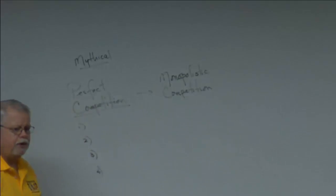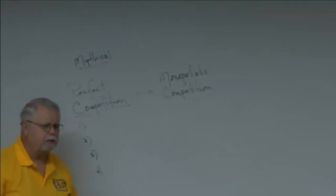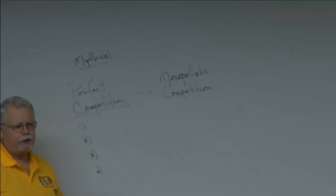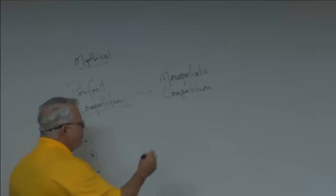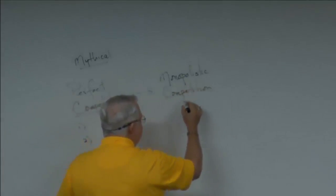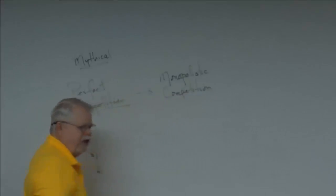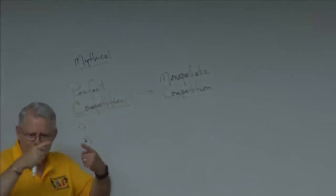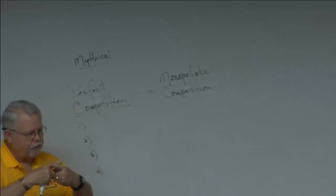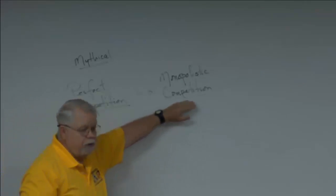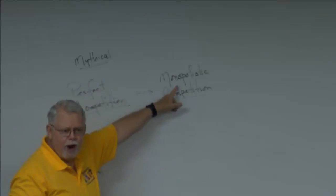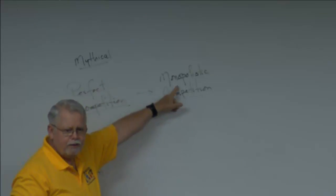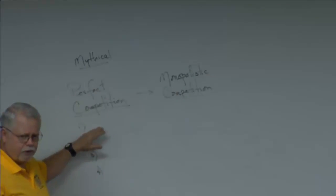Monopolistic competition — what is a monopoly? Only one seller. But look at this term: monopolistic competition — one seller, competition — it's an oxymoron, almost contradictory. What it's referring to is the fact that out of all the companies competing, each one is trying to create their own monopoly by violating one of these assumptions.